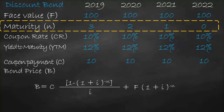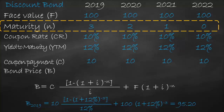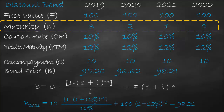The bond price formula is the present value of coupons plus present value of face value. For year 2019, coupon 10, YTM 12%, N equal to 3, this gives a bond price of 95.20. For year 2020, changing N to 2, the bond price is 96.62. For year 2021, changing N to 1, the bond price is 98.21. For year 2022, changing N to 0, the bond price is 100.